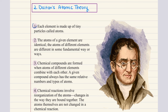Dalton's theory stated: first, each element is made up of tiny particles called atoms. Second, atoms of a given element are identical, and atoms of different elements are different in some fundamental way. Third, chemical compounds form when atoms of different elements combine, and a given compound always has the same relative number and types of atoms. Finally, chemical reactions involve reorganization of atoms — changes in how they are bound together — but the atoms themselves are not changed.